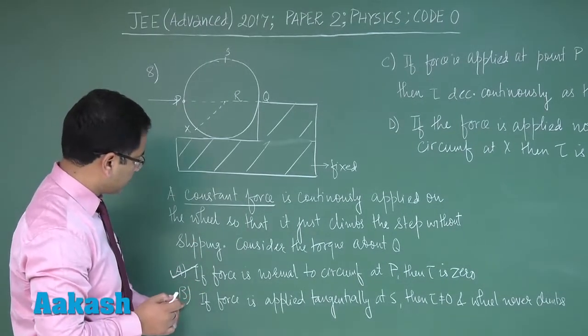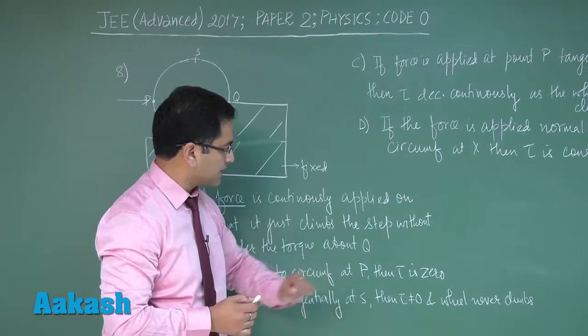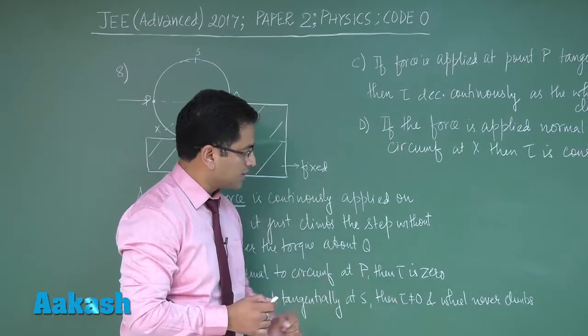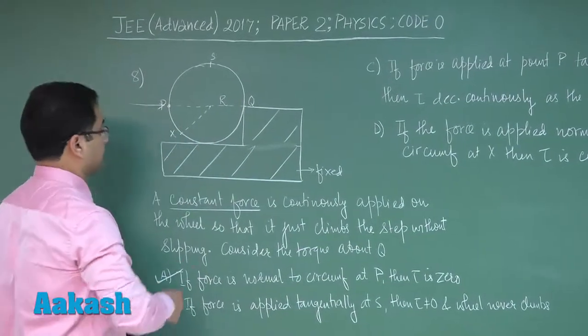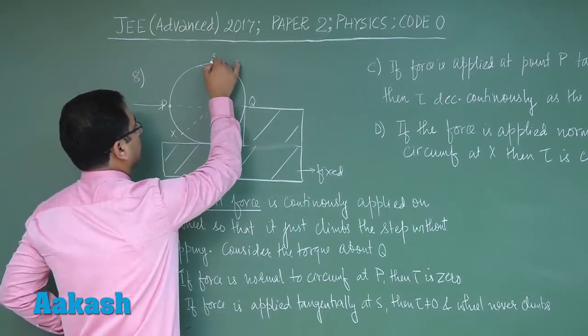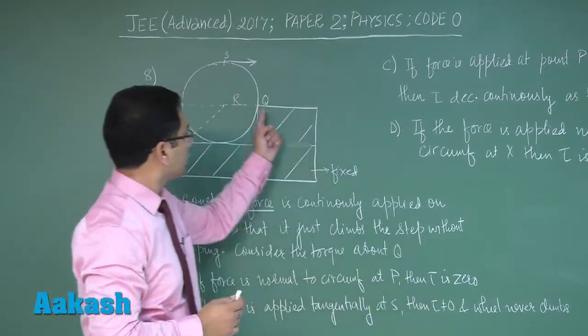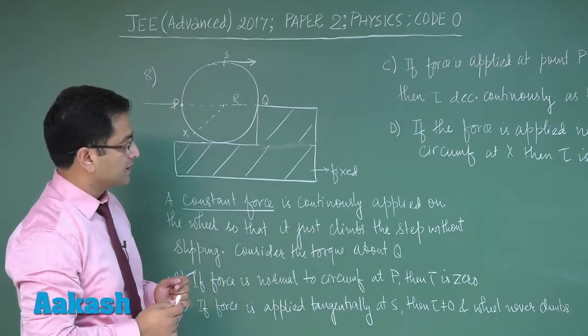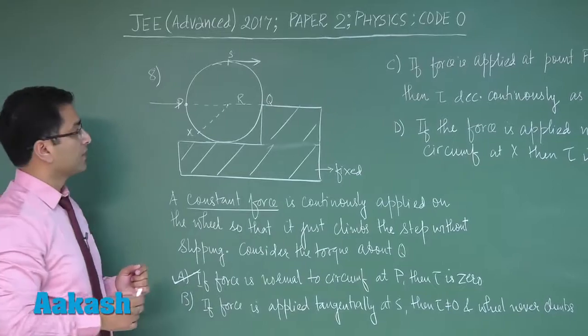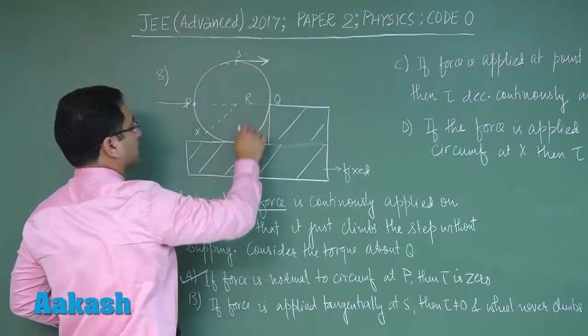Now let's go with option number B. If force is applied tangentially at S, then torque is nonzero. Torque about Q, that's matching. And the wheel never climbs? This does not match, because if someone applies force in this direction, then at the instant when it just loses contact here, the whole contact would be at this point.